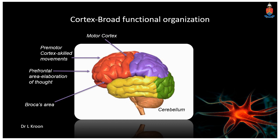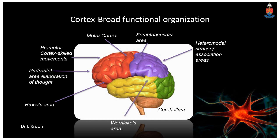In the parietal lobe, shown in purple, just posterior to the central sulcus, we have the primary somatosensory area. Just posterior to that, we see more of the heteromodal sensory association areas. The temporal lobes are shown in yellow, and in the superior part of the temporal lobe, we see Wernicke's area for receptive language, and just below that, the supramarginal and angular gyrus. We also get the auditory cortex in the superior temporal lobe. Shown in green is the occipital lobe, associated with the visual cortex.